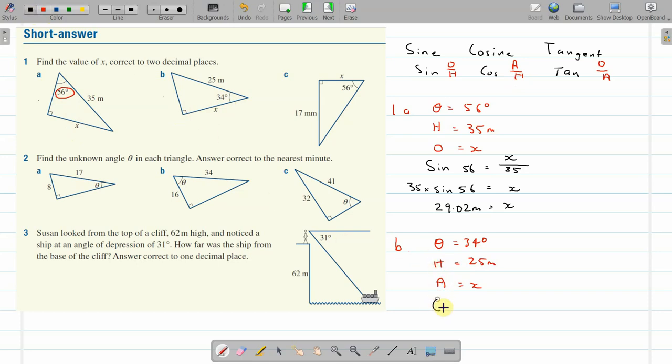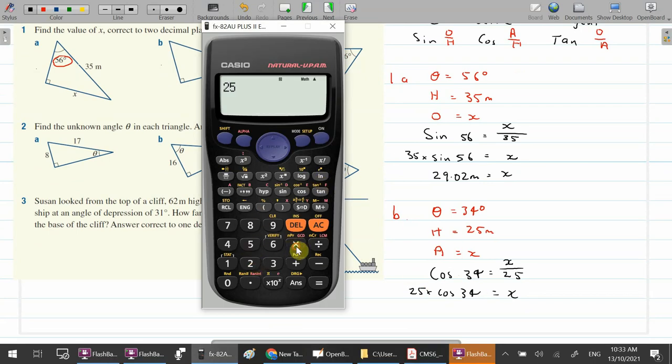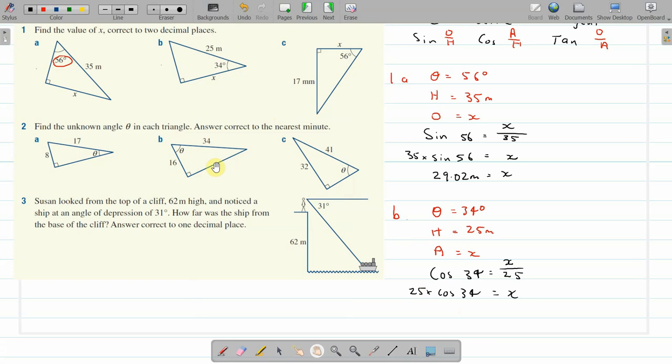Because that's the one that uses these two. So we put the cos of 34 equals the adjacent side, which is what we're going to find, over the hypotenuse. And just like we did here to rearrange things so we isolate our x, times 25. And that's our calculator step. 25 times the cos of 34. Two decimal places, 20.73 meters.